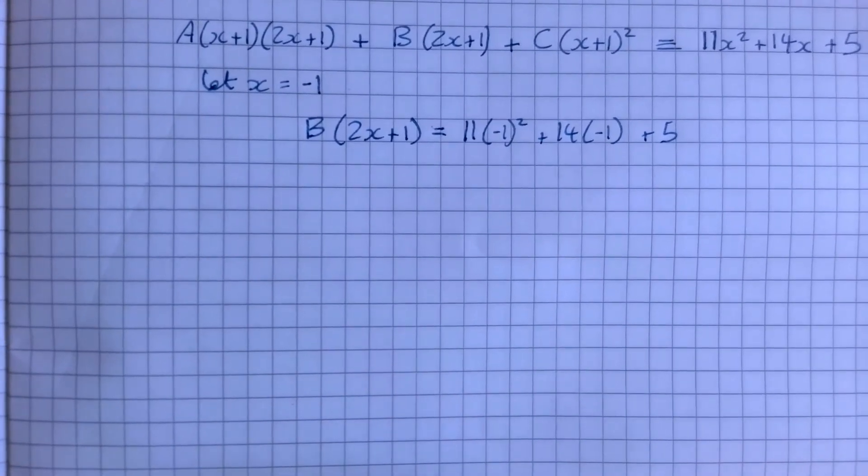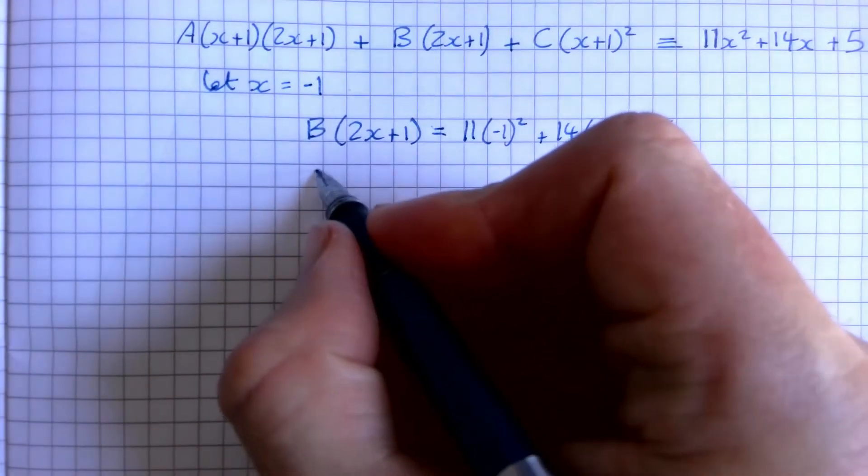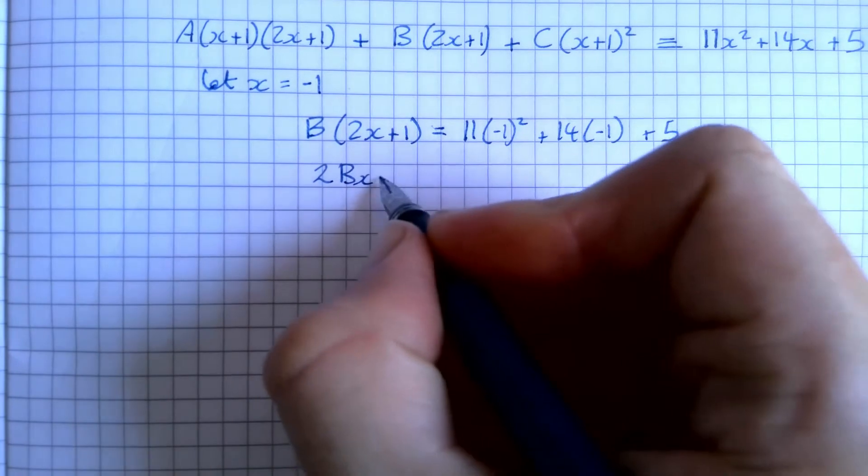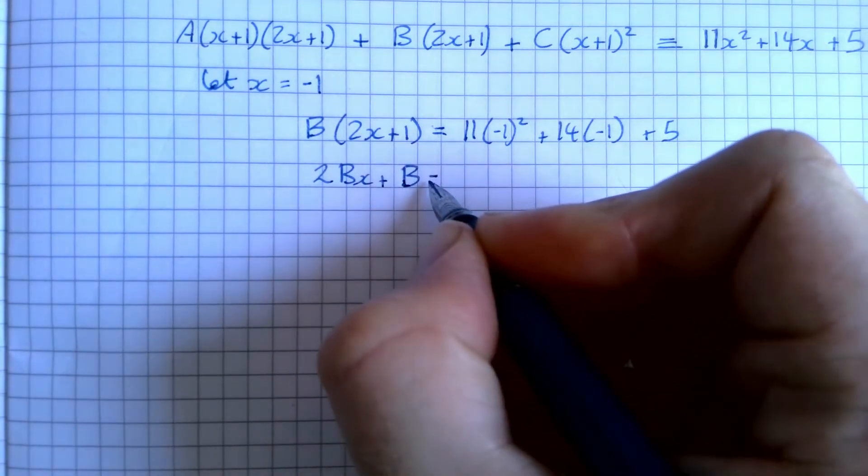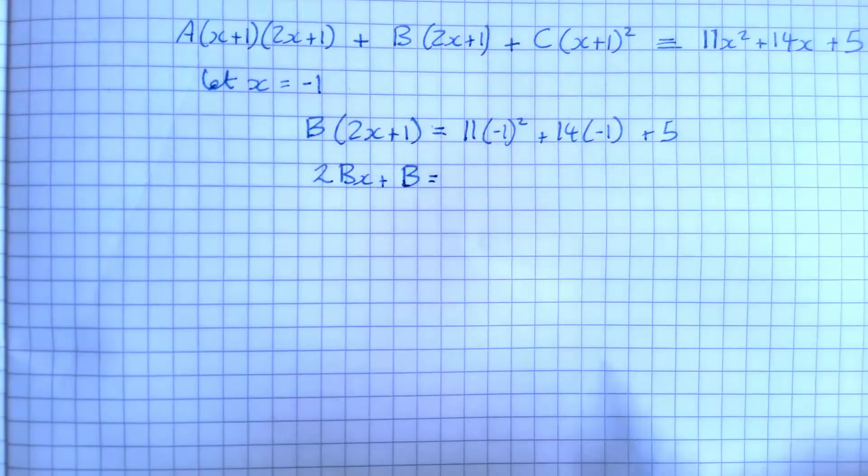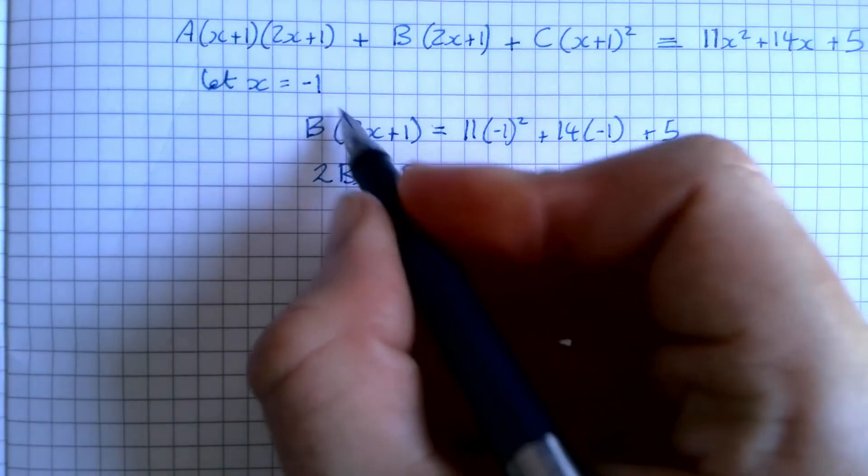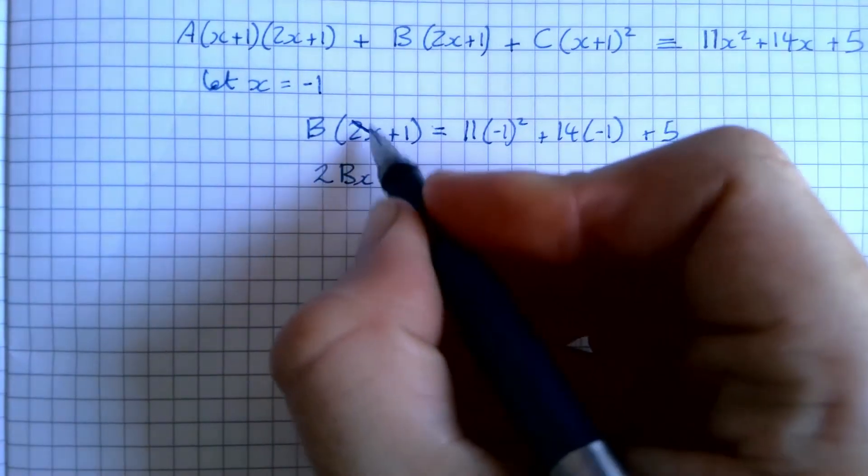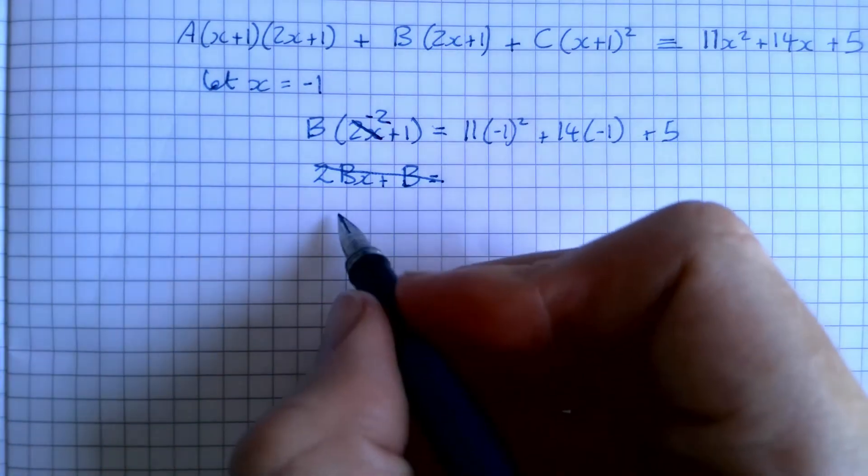And then we're going to be expanding all of that and simplifying it. So that gives us minus 2B plus B. Now it doesn't worry if I left that x in there. That shouldn't say 2x, should it? That should say 2 times minus 1, so let's just put minus 2 in there instead and then start that bit again.